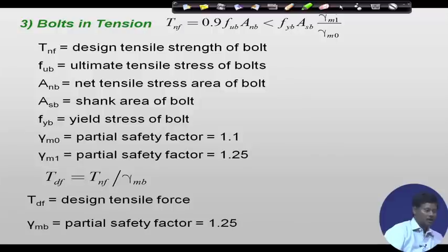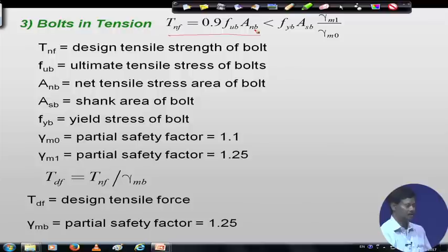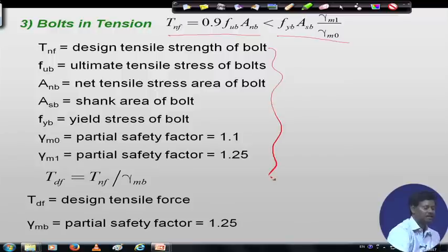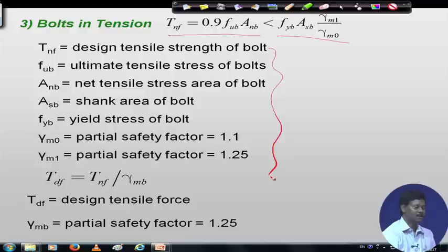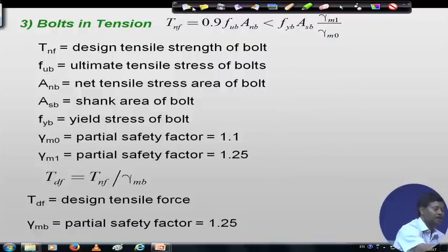For a bolt in tension, the tensile strength T_NF = 0.9 × FUB × ANB, and it must be less than FYB × ASB × γm1 / γm0. Here FUB is the ultimate tensile stress of the bolt, ANB is the net tensile stress area of the bolt, and ASB is the shank area of the bolt. The design tensile force = T_NF / γMB. The process is similar to bearing type bolts except for the shear strength calculation.